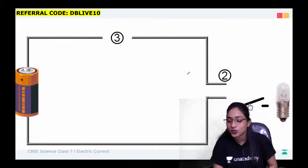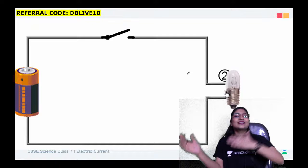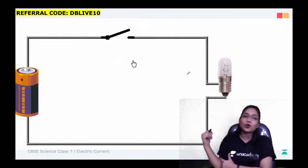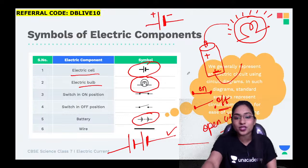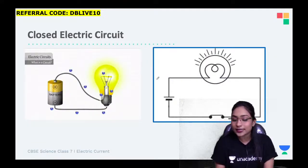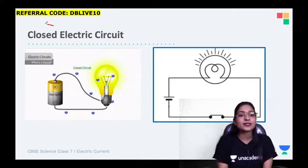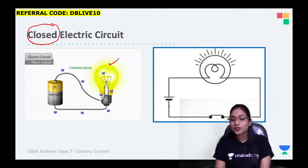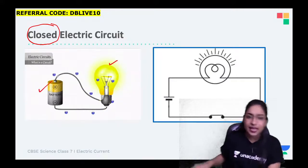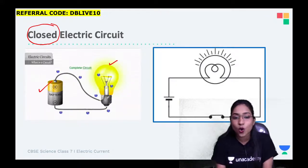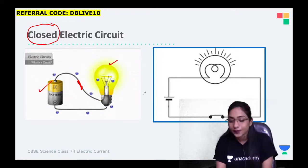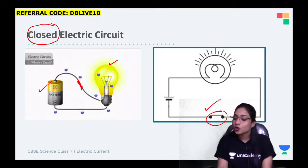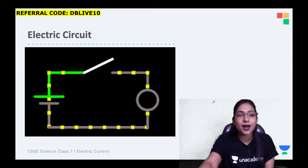Now we will study the open and closed circuit. Everyone, look at this - you can see this is a closed circuit because the bulb is glowing. The current is passing and there is no gap. The switch is on - it is a closed circuit, no gap anywhere.